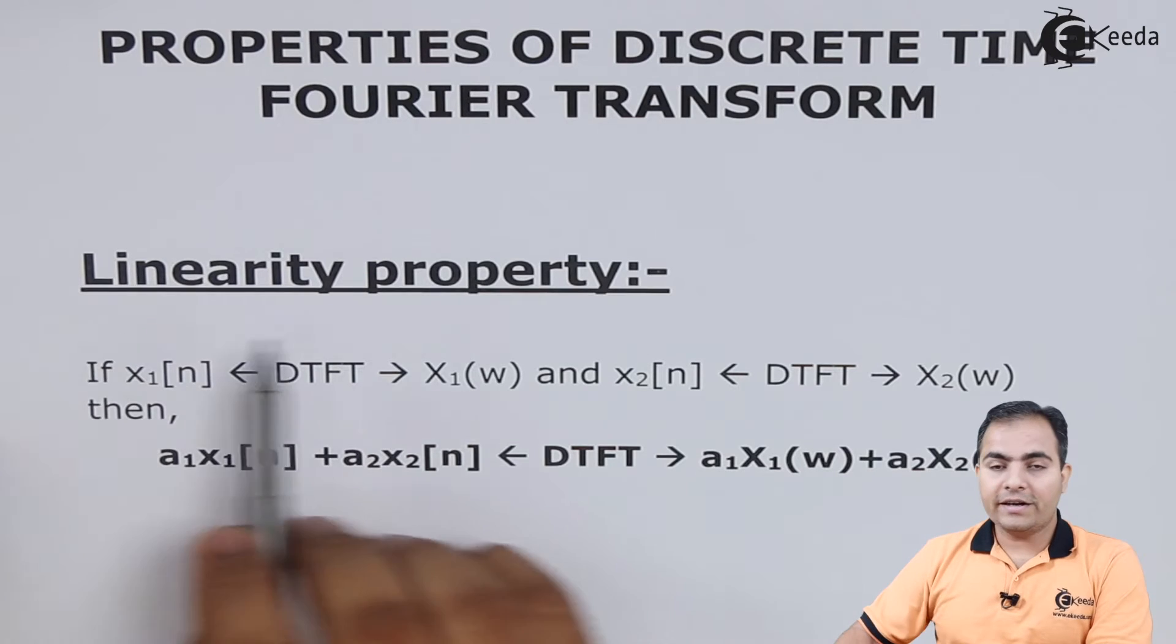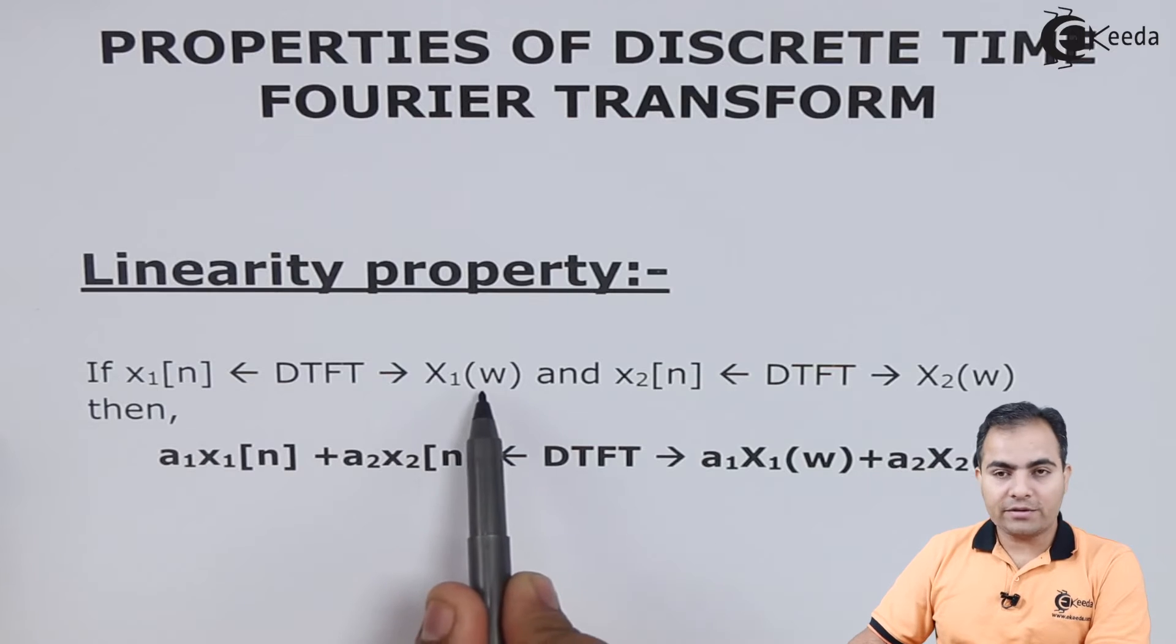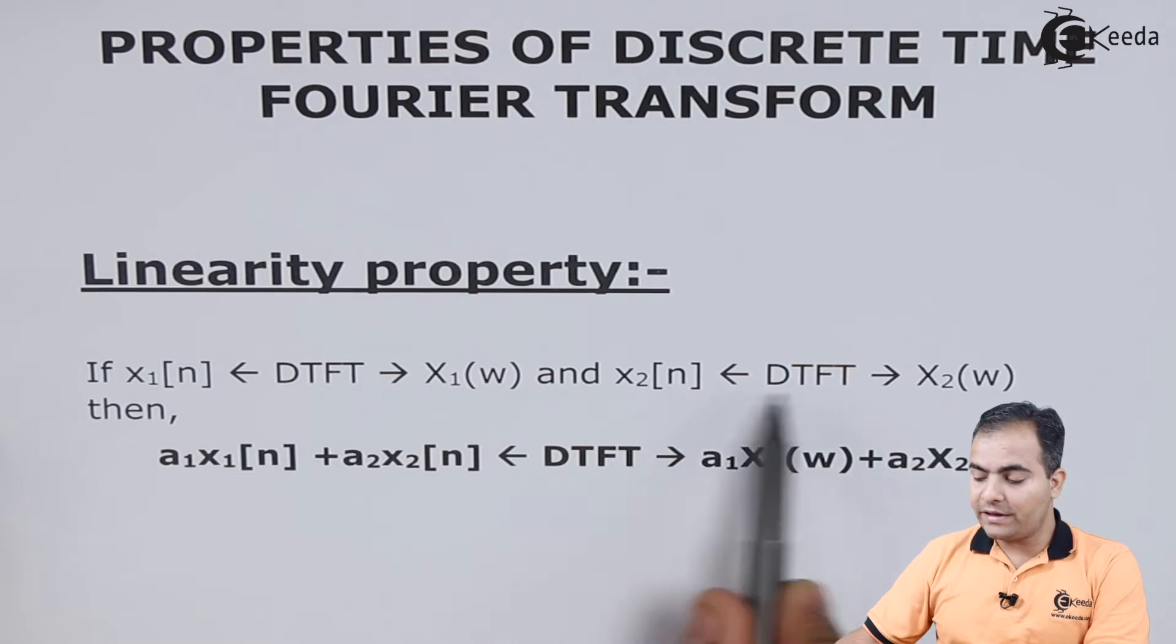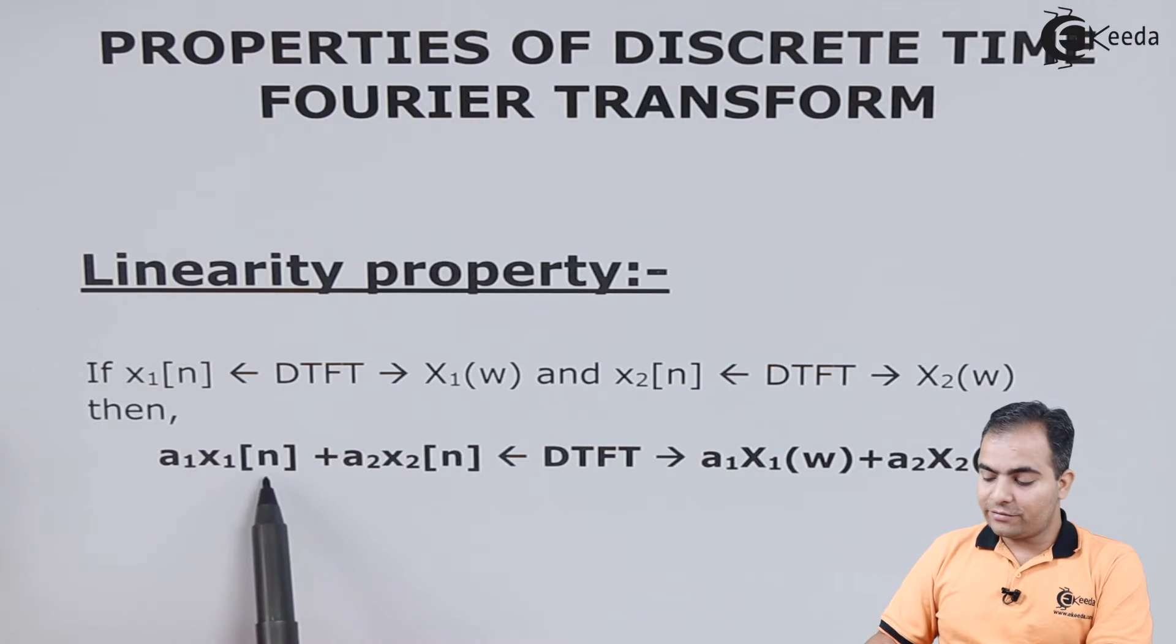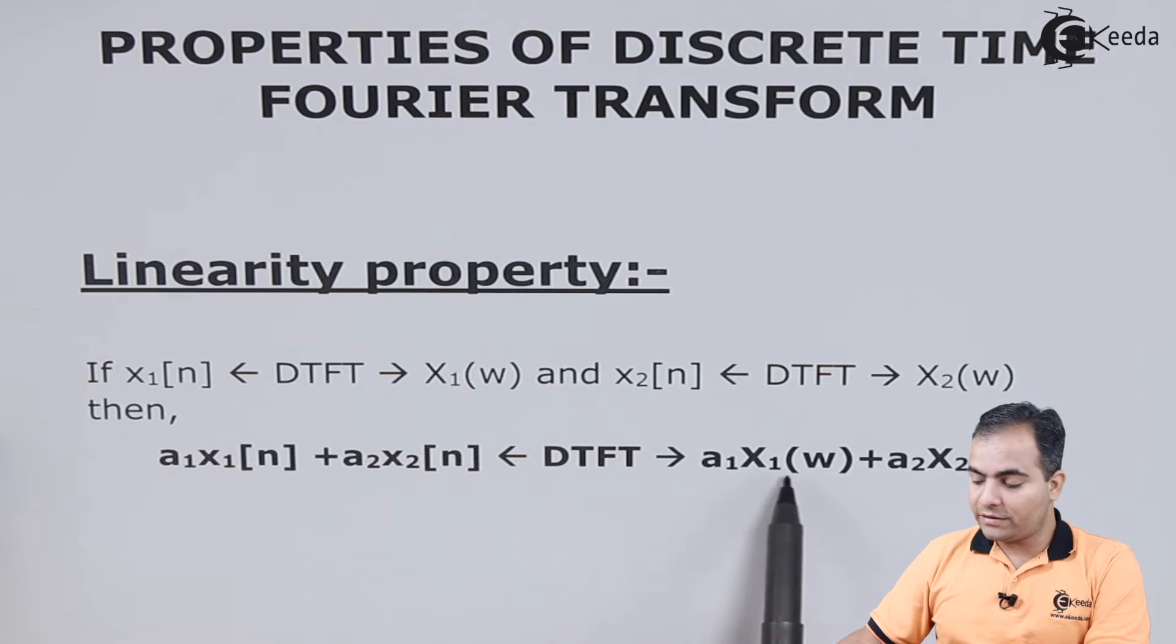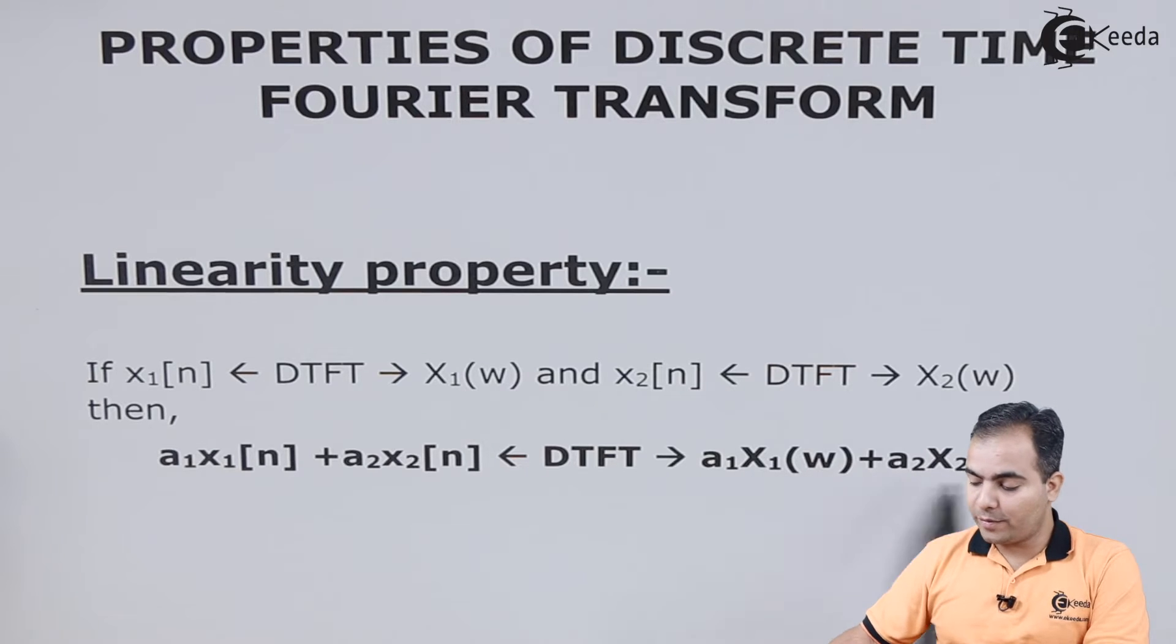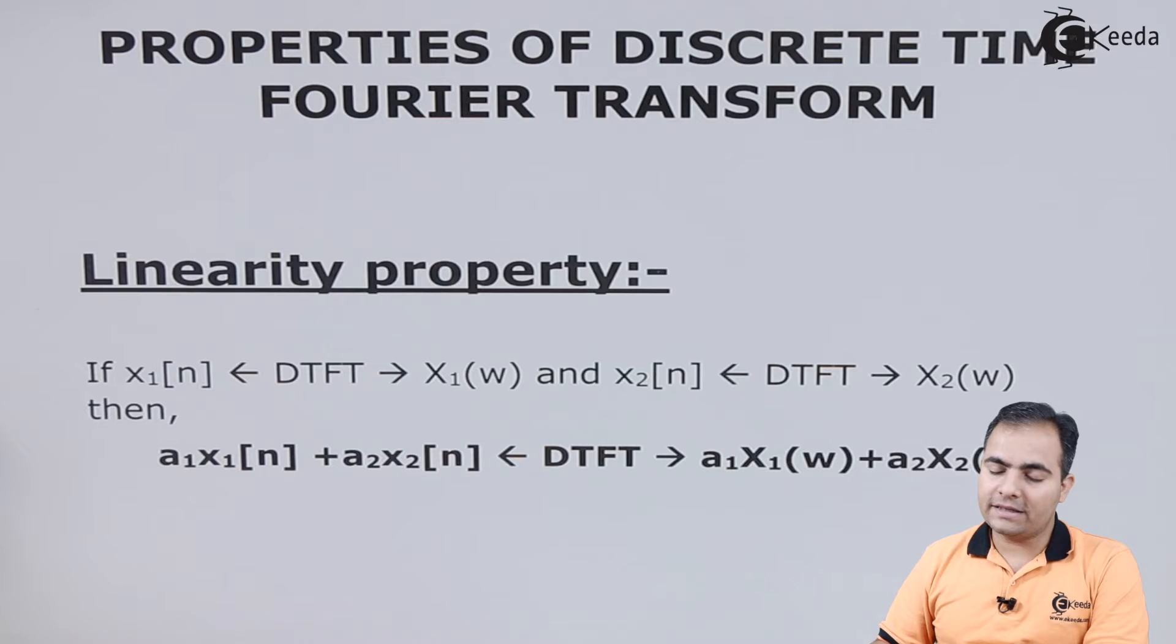Linearity property: if x1[n] DTFT is X1(ω) and x2[n] DTFT is X2(ω), then a1·x1[n] + a2·x2[n] DTFT is a1·X1(ω) + a2·X2(ω), where a1 and a2 both are constants and x1 and x2[n] are my signals or functions.